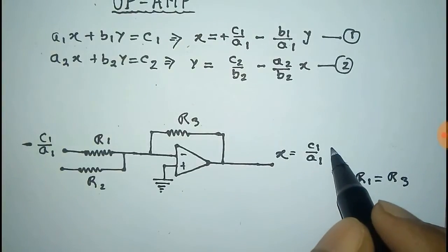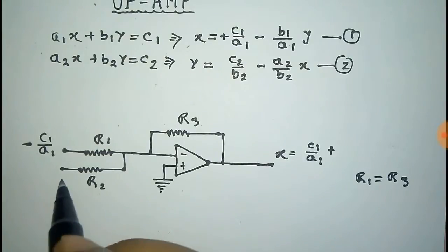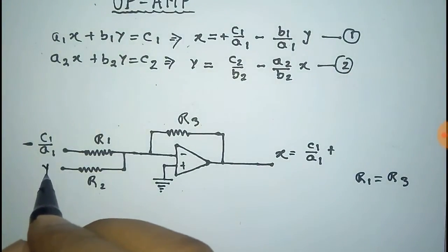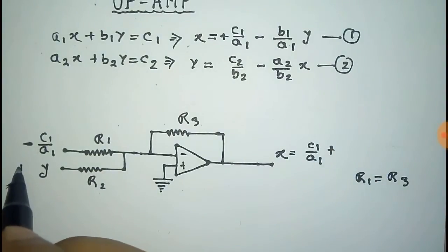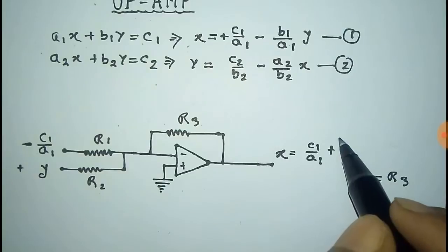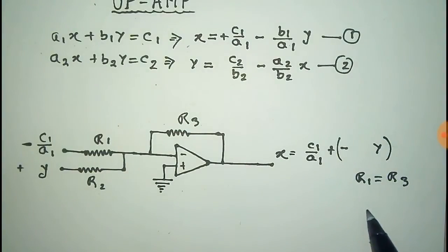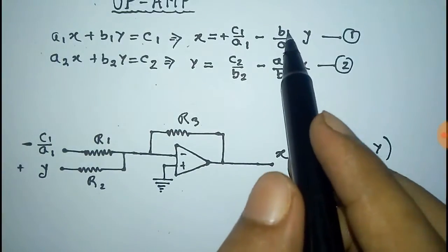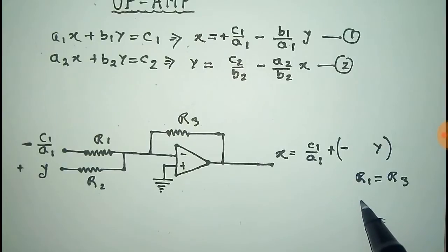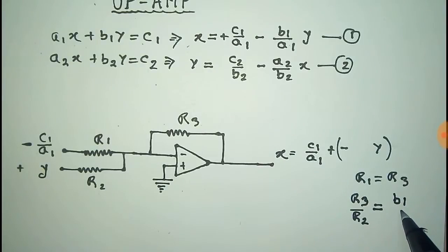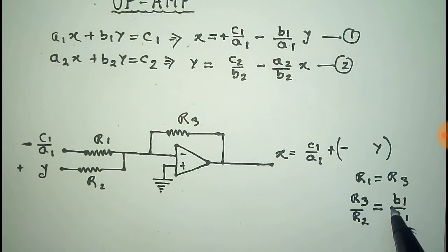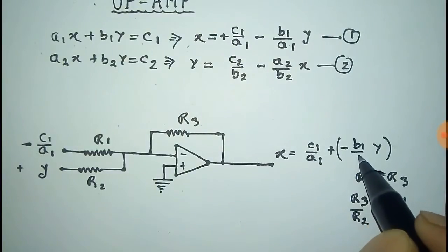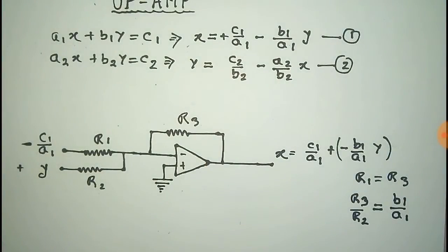The second input will be added with this. Give the variable y at the second input. The output will be minus something multiplied with y. To get the multiplication term, we give the ratio r3/r2 = b1/a1, because b1/a1 is multiplied with y. Thus we get the first equation implemented in the circuit.